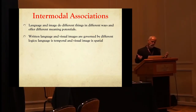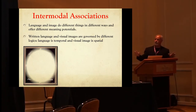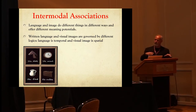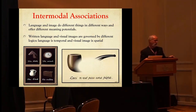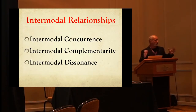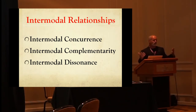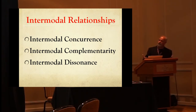The notion of intermodal association: language and images are different things and they work in different ways. But what really gets interesting is when we start putting image and language together and it doesn't work as we would expect. Rene Magritte's work — certainly the treachery of images — does this. It's not just the image. So when a picture book has an image and a text, it's not two separate systems — there's something in between. And that something is concurrence, complementarity, and dissonance.